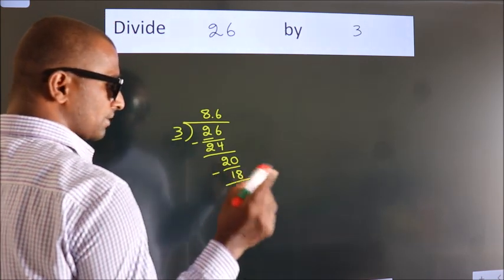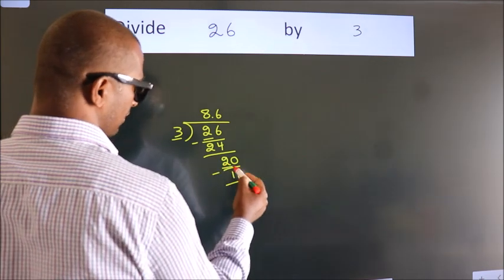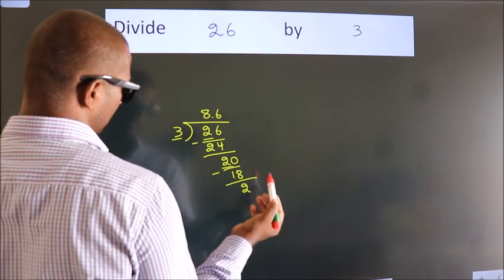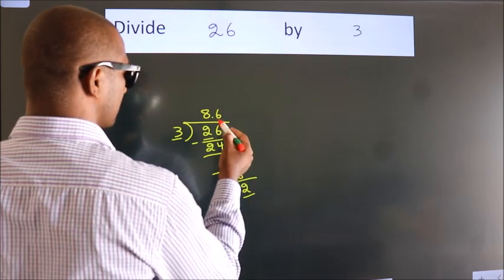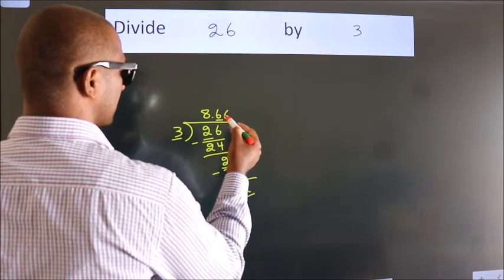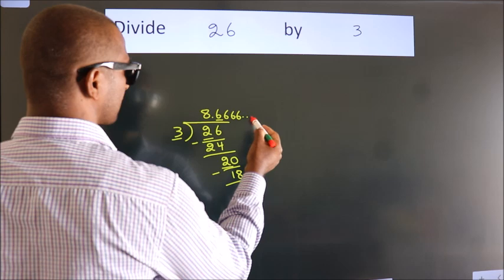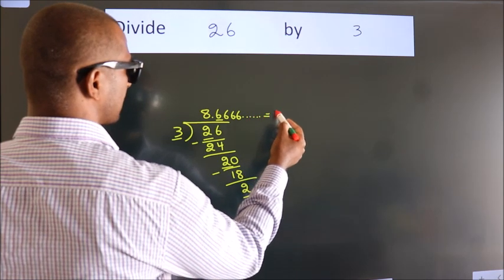We get 2. Now you observe here, we got 2 here and we got 2 again. That means this number keeps on repeating. So this is our quotient.